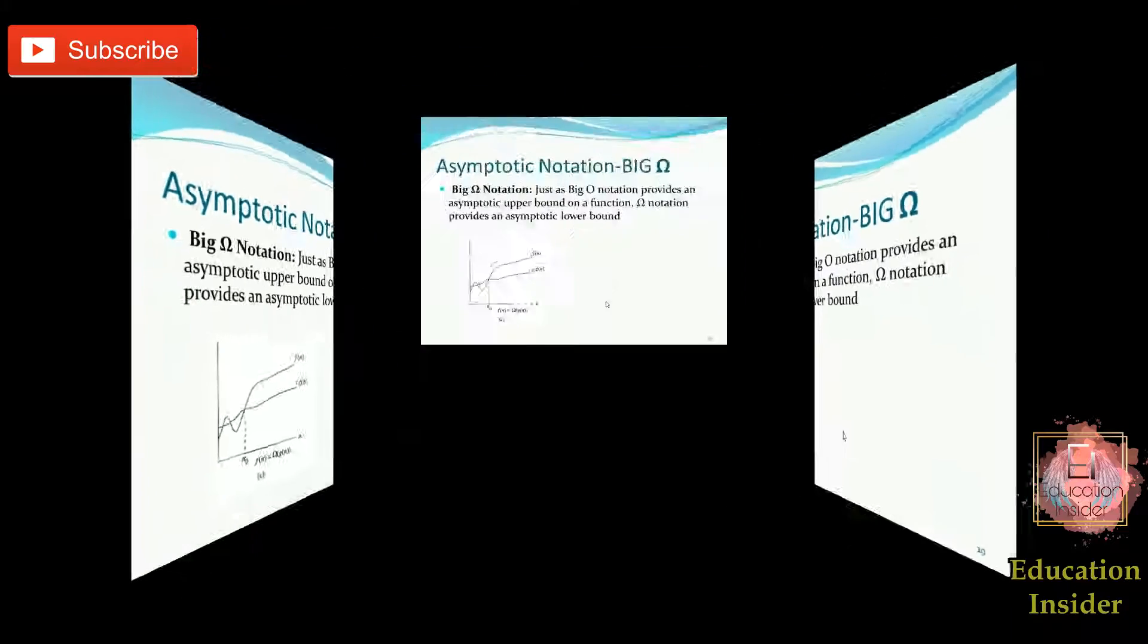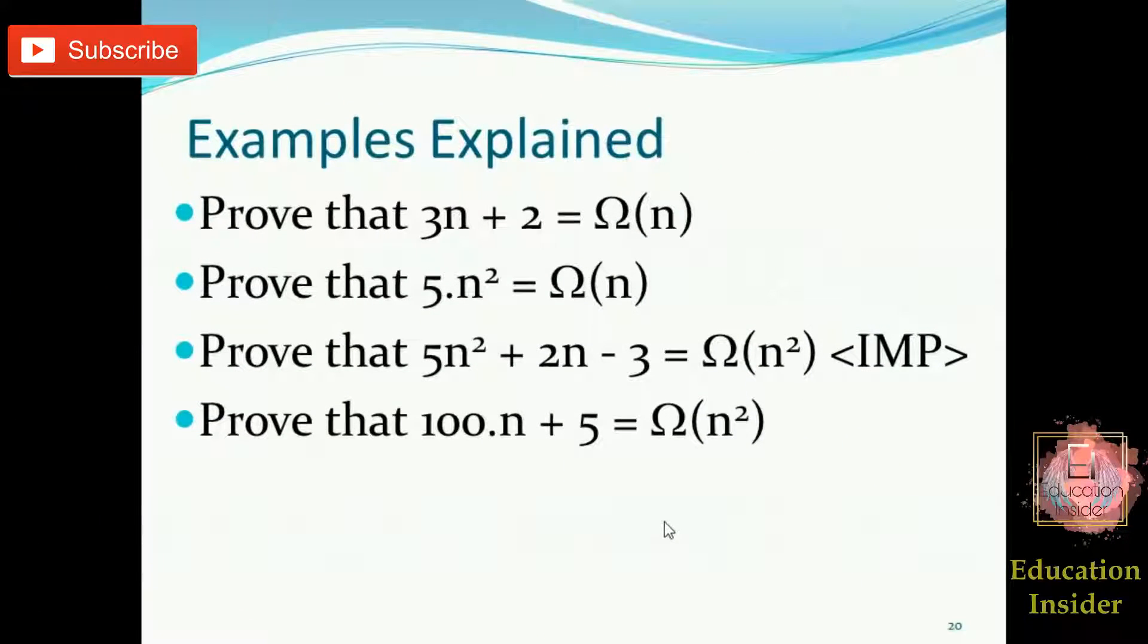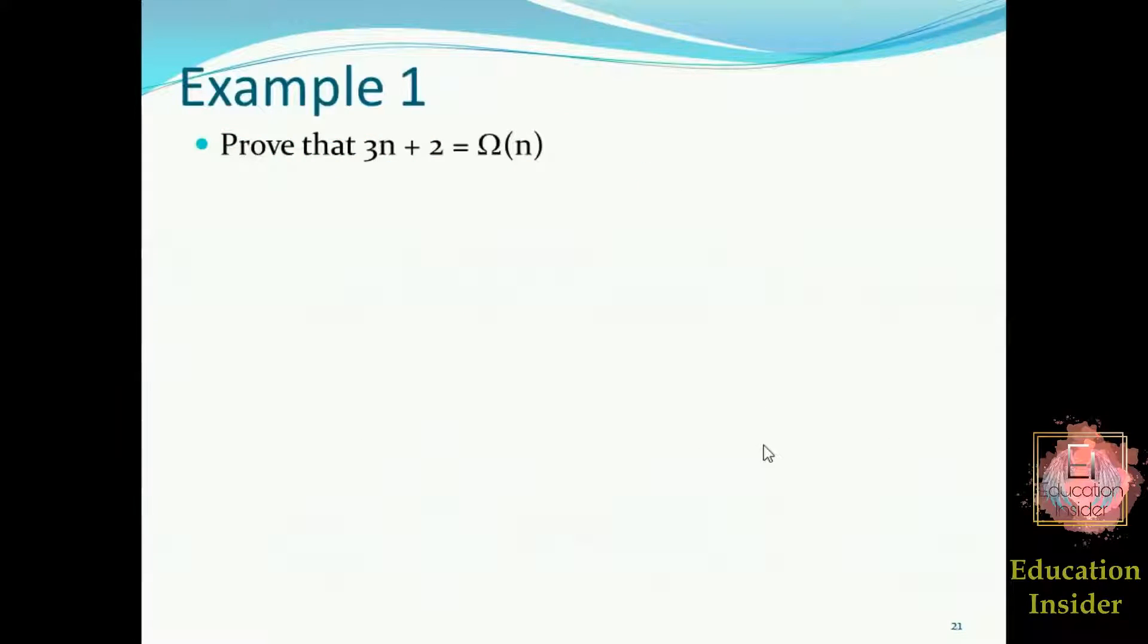So these are some examples that we will be covering in this video. Keep watching for best understanding of Big Omega notation. This is example number 1 and we need to prove the lower bound, that is Big Omega of f(n) function that is 3n plus 2. First thing first, let us assume the inequality for Big Omega.